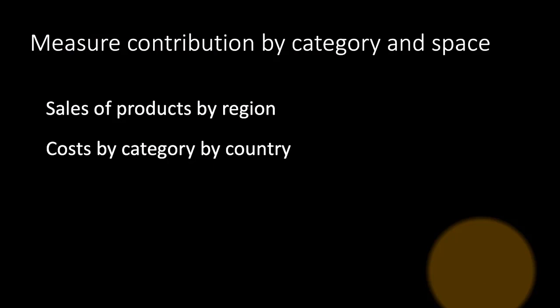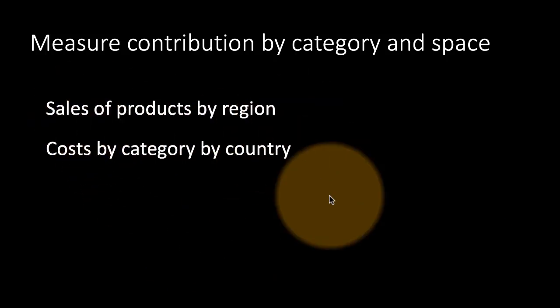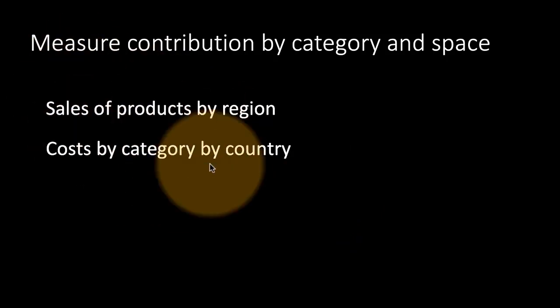And again, we can look at measure contribution by category and space. By category and space, what we mean is something like sales of products by region. Let's say your company has five products and four regions, then we can look at the sales for each product region combination. Or not just sales, you can look at costs—any measure, basically. If you have any measure, you might be able to do this kind of analysis.